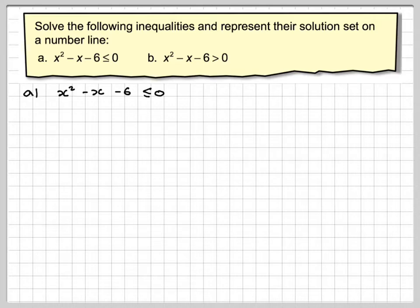Okay, so we've got x squared minus x minus 6 is less than or equal to 0. First, we solve the quadratic equation x squared minus x minus 6 is equal to 0. This is quite an easy one to factorise.